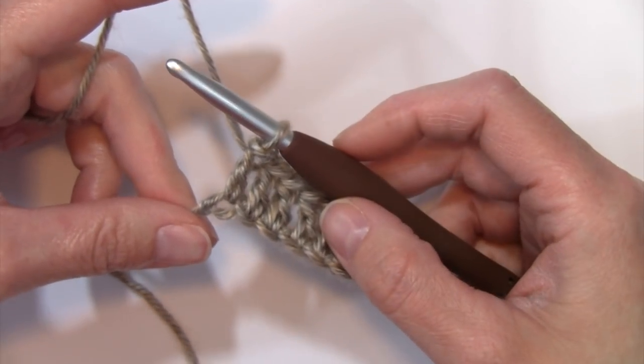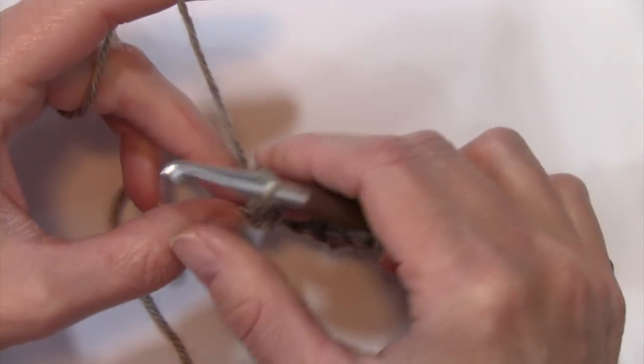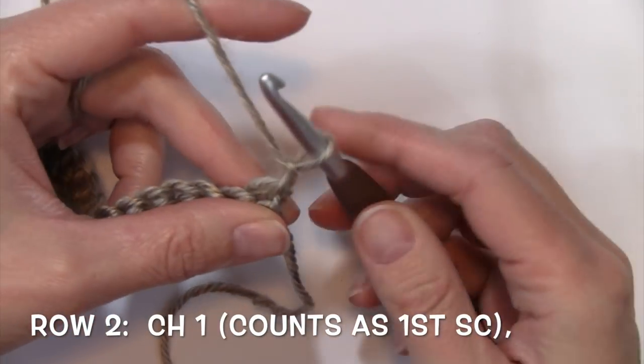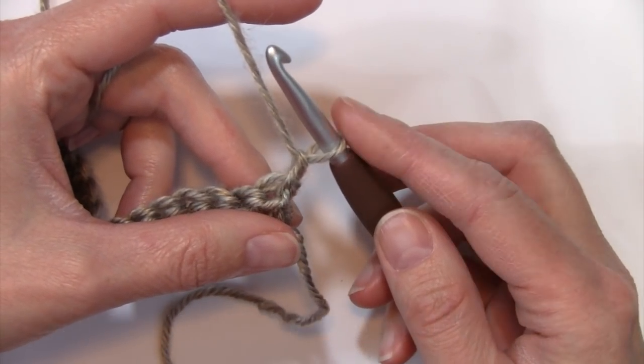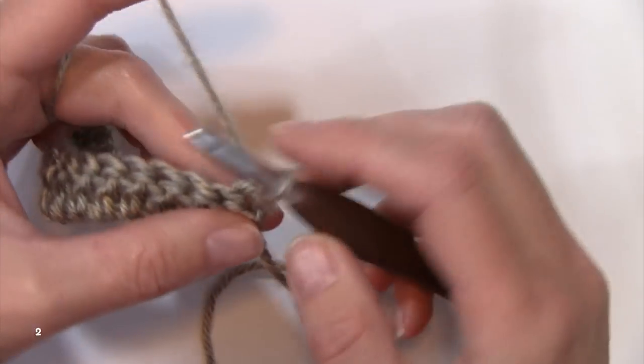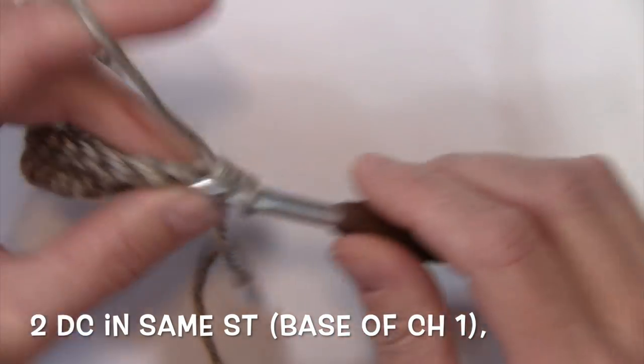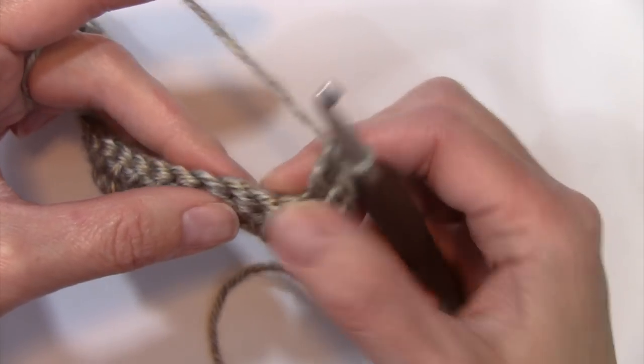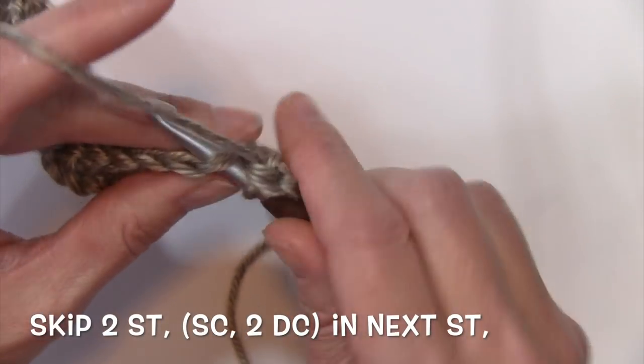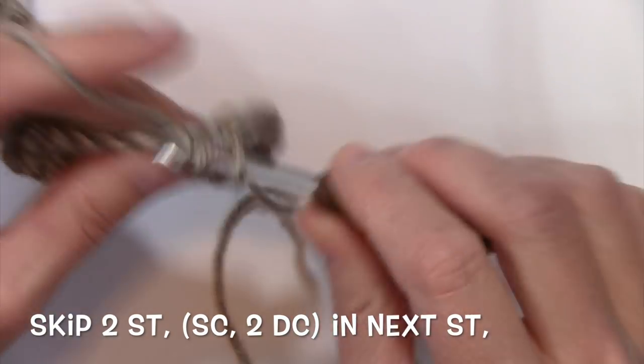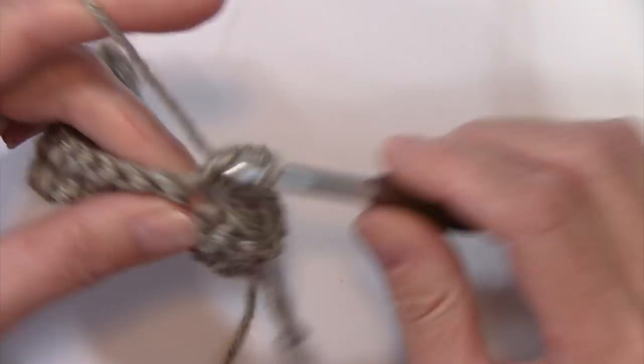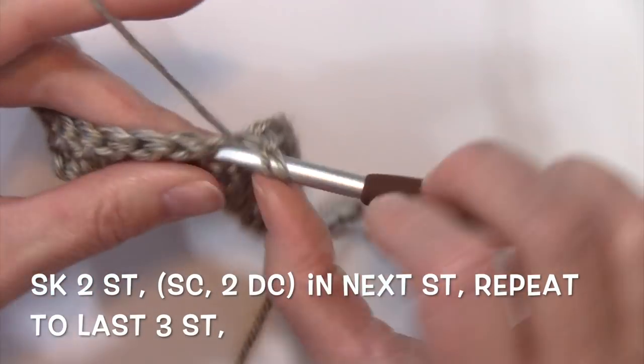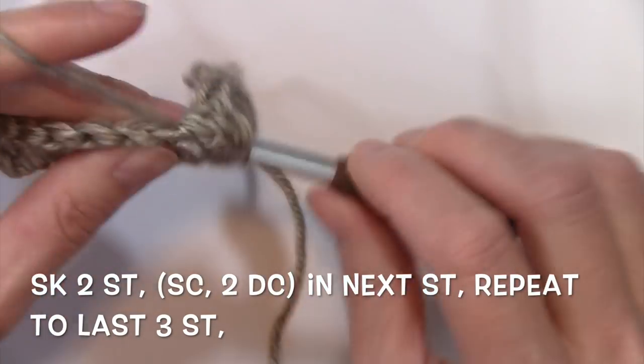So once you've worked that final double crochet in that last chain of that row, go ahead and turn your work to start row two, chain one. That chain one is going to count as your first single crochet stitch for this row. Now you're going to work two double crochets in that same stitch, skip two stitches, and in the next stitch work a single crochet and two double crochets.